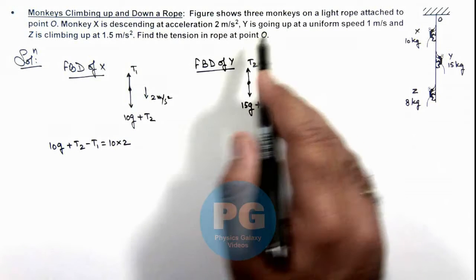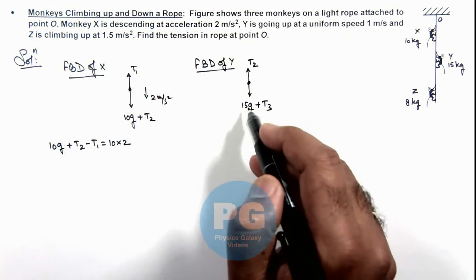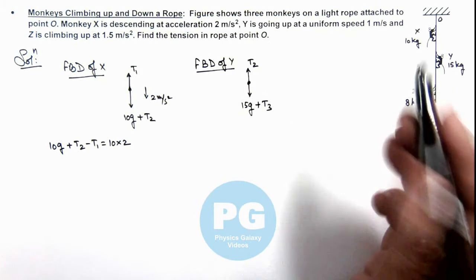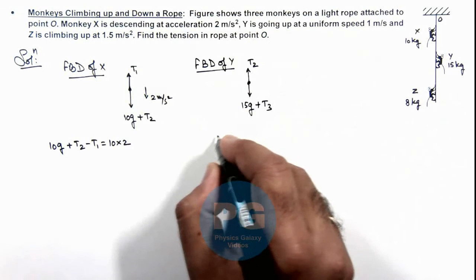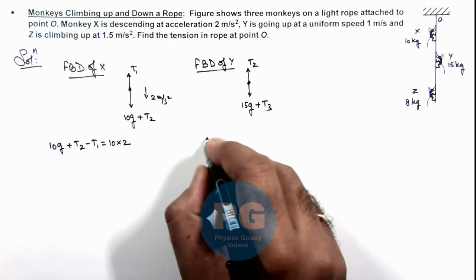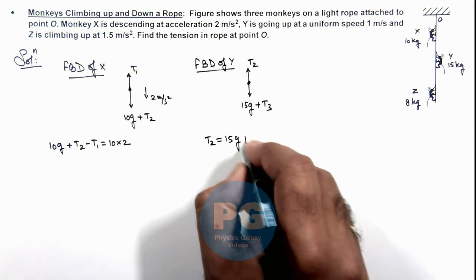And as we are given Y is going up at a uniform speed, its acceleration is zero, that means the forces acting on monkey Y must be balanced. So here the equation will be written as T2 equals 15g plus T3.